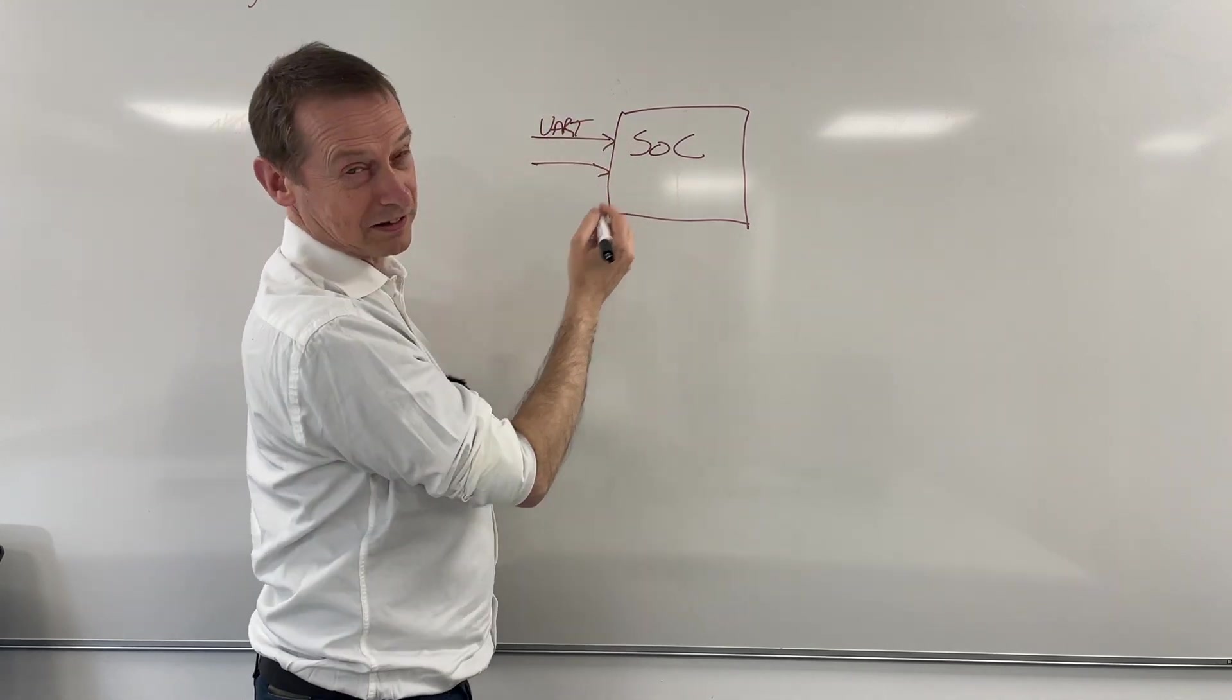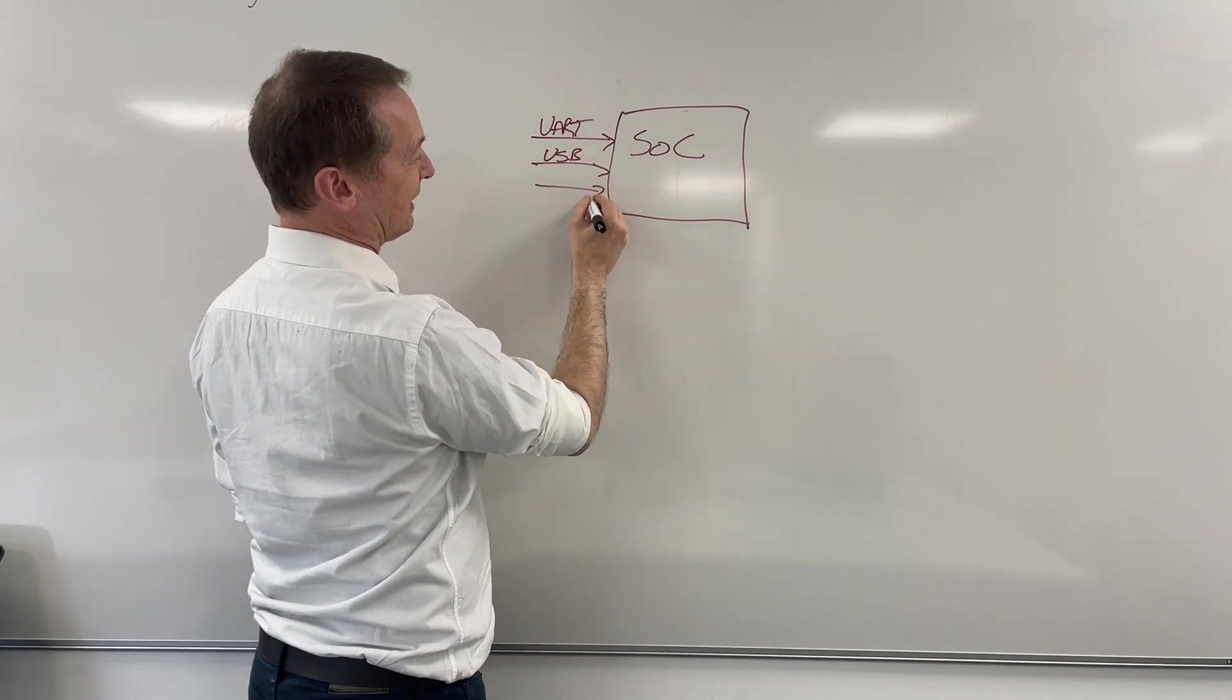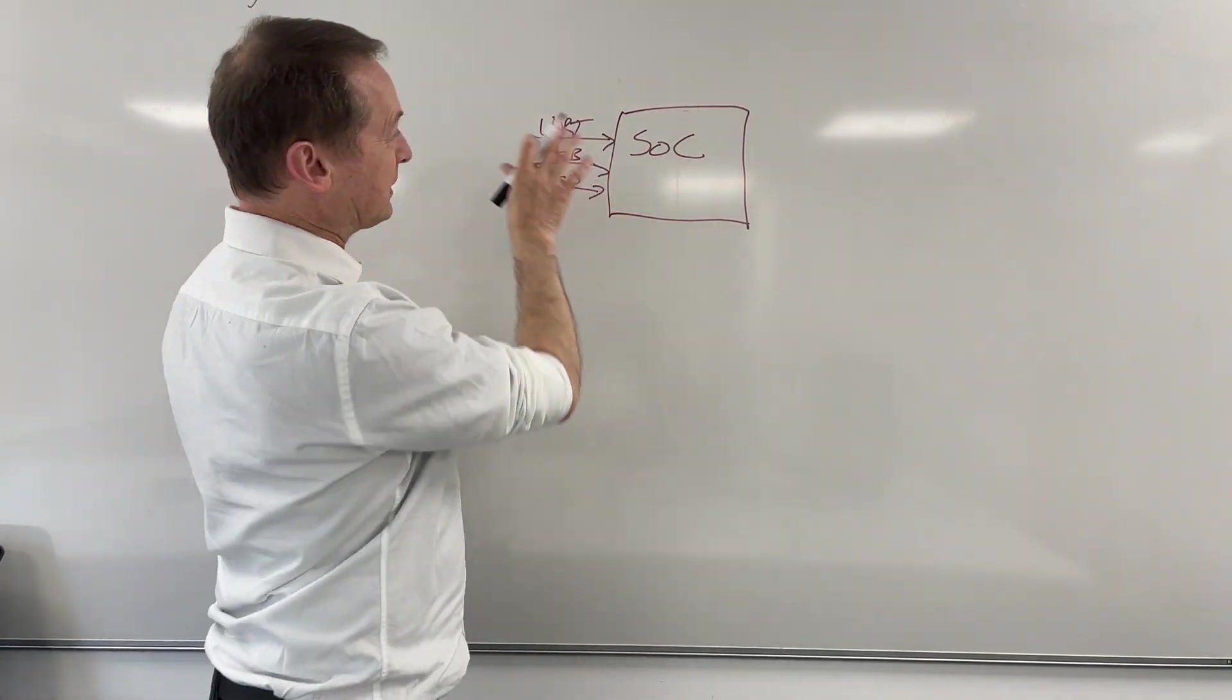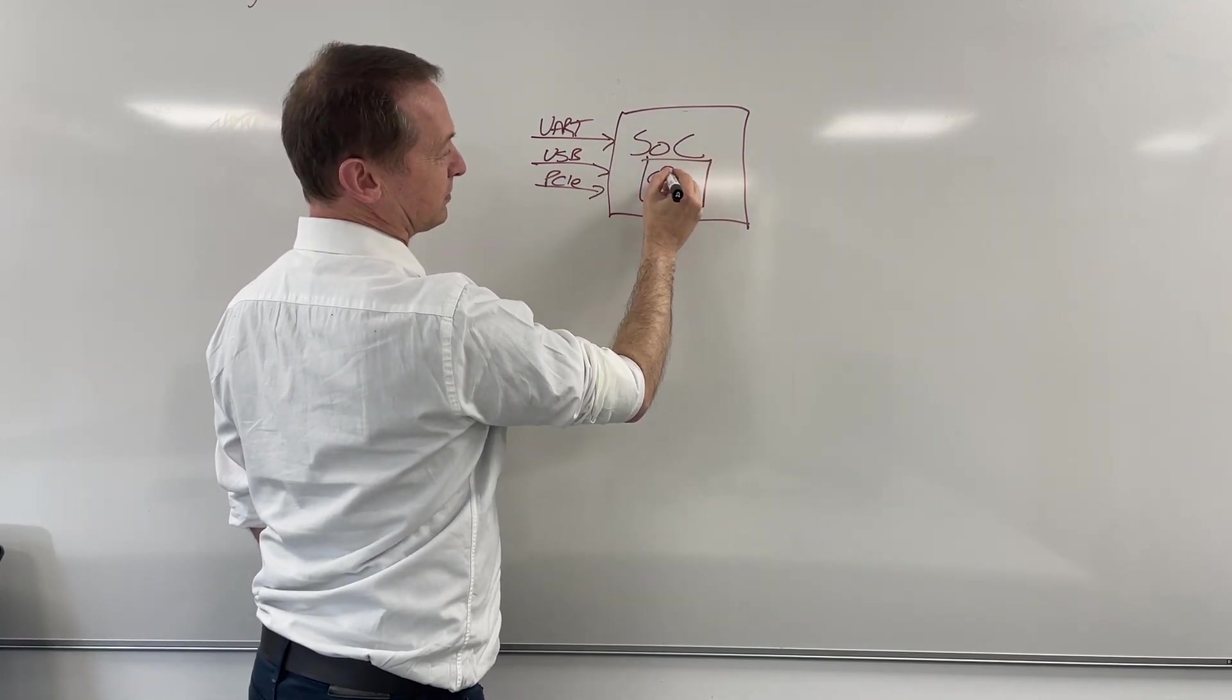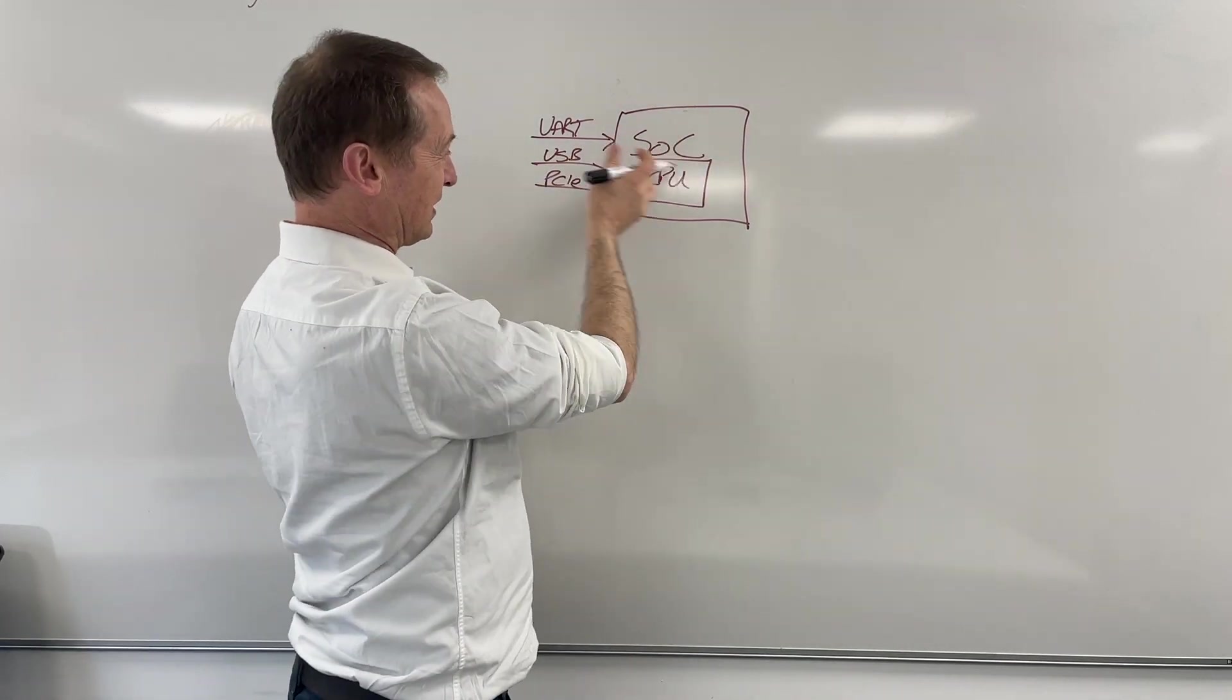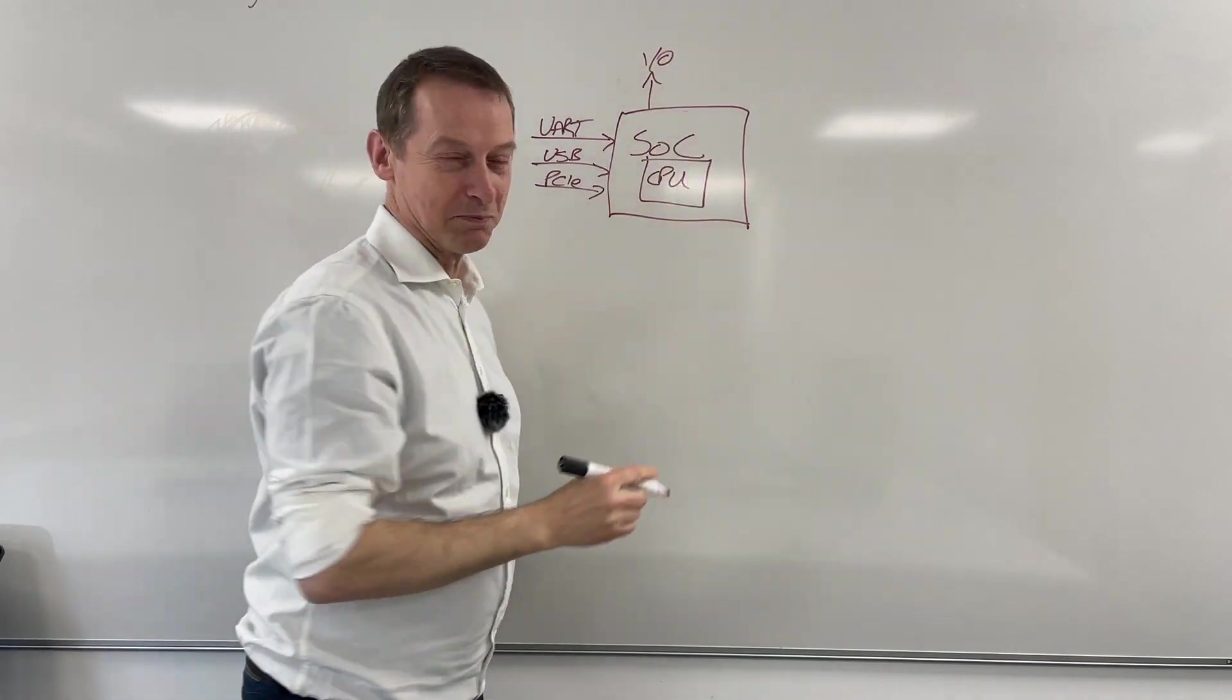Obviously, on a more complex SOC, you'd have some like USB, PCI, anything like that. So basically, interfaces coming in, you do some processing on a CPU in here and you do some operation and typically you might send stuff out via IO and control something.